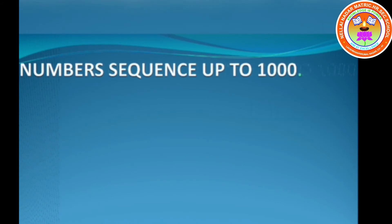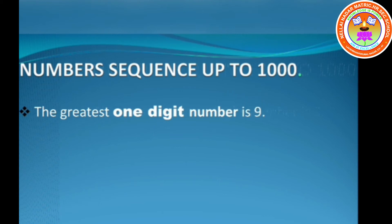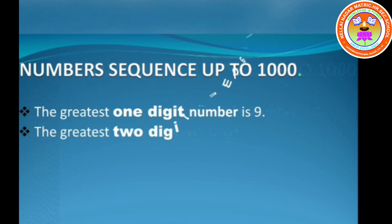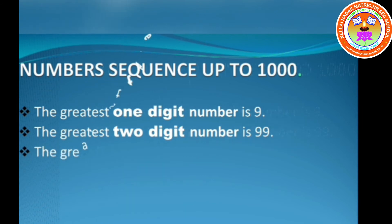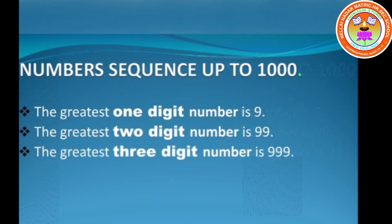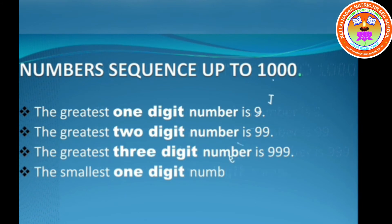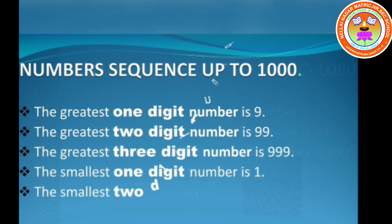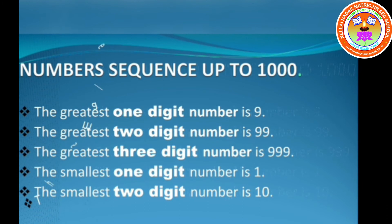Number sequence up to 1000. The greatest 1-digit number is 9. The greatest 2-digit number is 99. The greatest 3-digit number is 999. The smallest 1-digit number is 1. The smallest 2-digit number is 10. The smallest 3-digit number is 100.